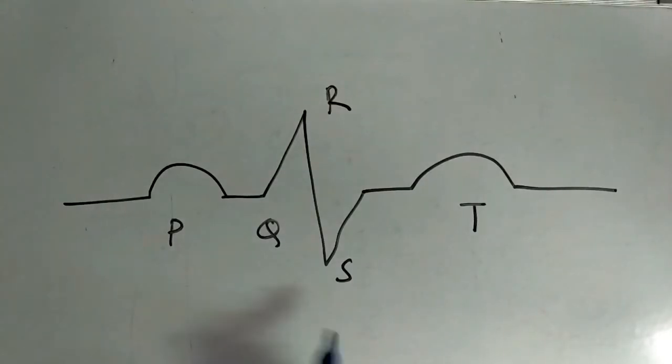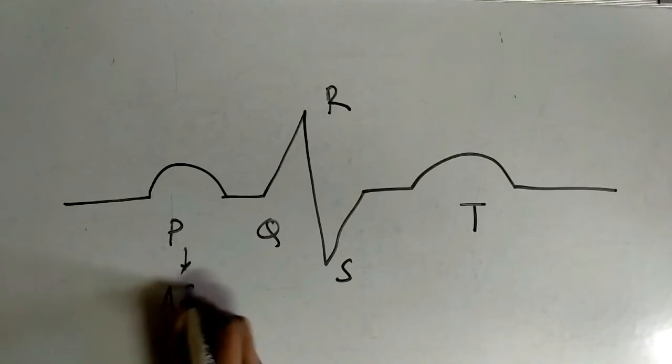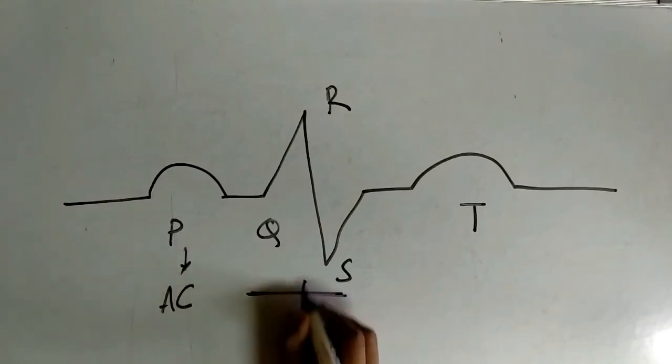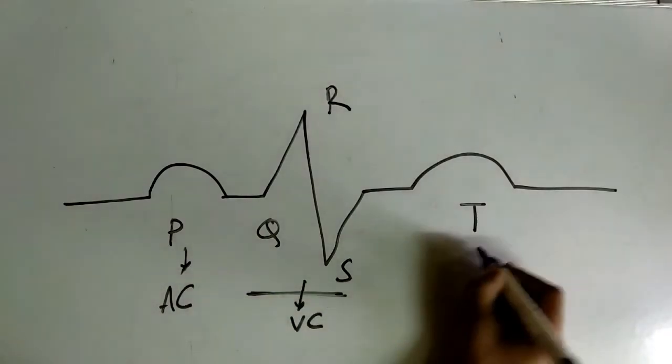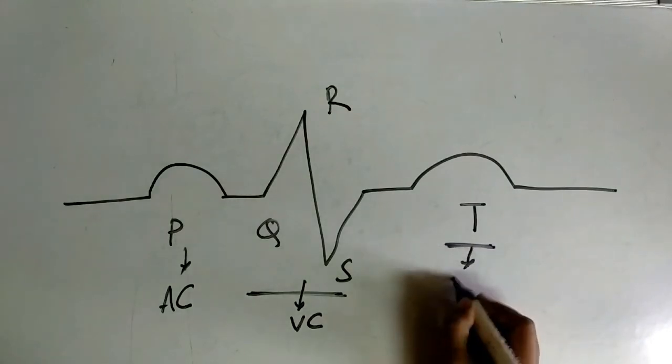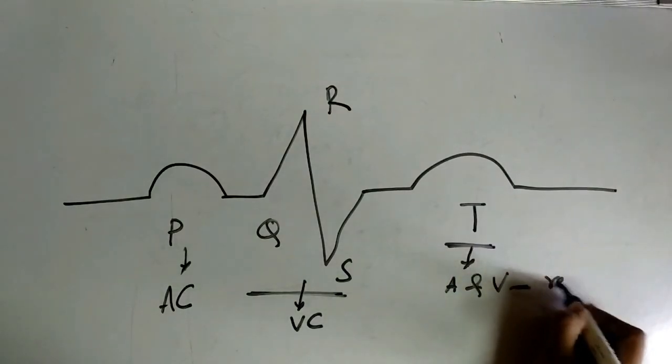So we have seen that P wave is because of atria getting contracted, QRS complex is because of ventricle getting contracted, and T wave is because ventricle and atria both get relaxed.